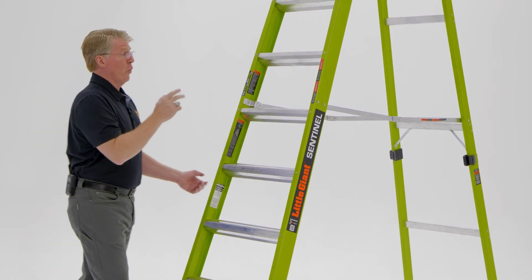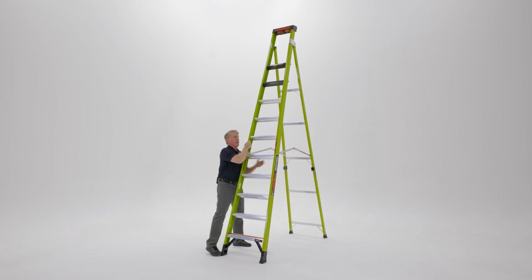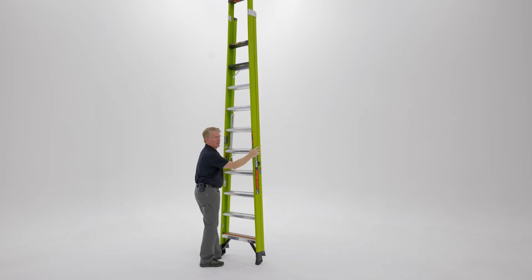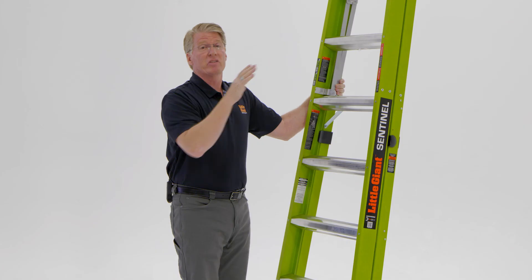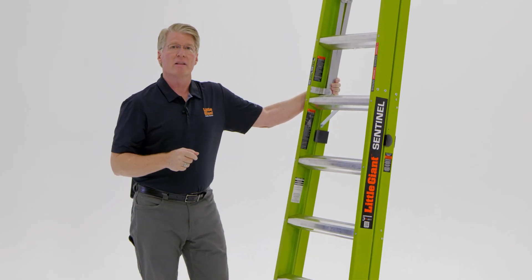They are true two-in-one ladders, so they can be used open in the A-frame position. And then again, closed, locked into place and leaned as a leaning stepladder. This is the Sentinel in a 10-foot and a 12-foot model by Little Giant Ladder Systems.